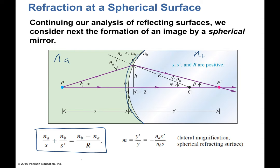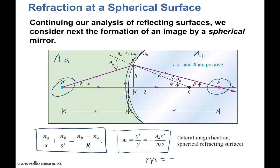Instead of 1 over S, you have the index of refraction of medium A divided by S, because the object is in medium A. The image is then in medium B. The equation takes NB over S prime on one side and the difference NB minus NA divided by the radius of curvature on the other. The magnification equation — Y prime over Y — is also modified to account for the index of refraction.